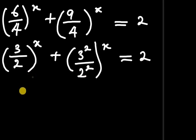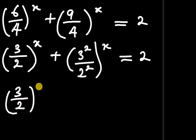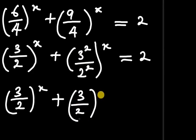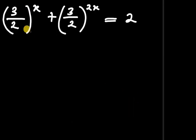So this becomes 3 divided by 2 all to the power of x, plus 3 divided by 2 all to the power of 2 times x, and this equals to 2. So we have 3 divided by 2 all to the power of x, plus 3 divided by 2 all to the power of 2x, equals to 2.